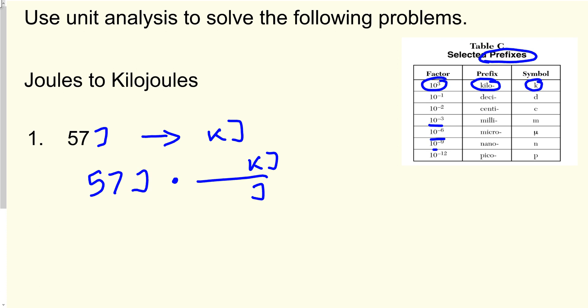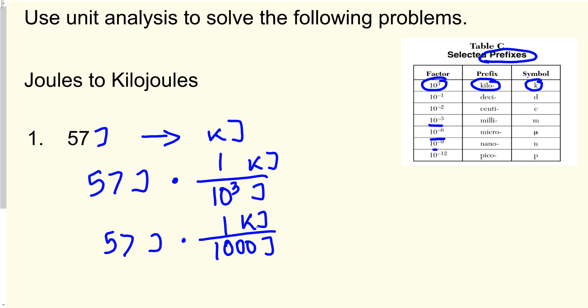So I know that 57 joules needs to be converted to kilojoules. I write joules at the bottom and kilojoules at the top so they cancel each other out, then multiply by a conversion factor. The question is: how many joules equal 1 kilojoule? Since joule is smaller, you need more of them to equal the bigger unit — you need 10 to the power 3, or 1,000 joules, to equal 1 kilojoule.